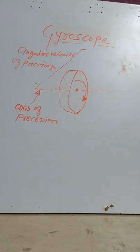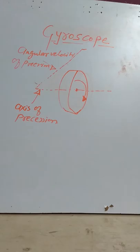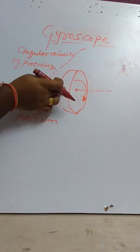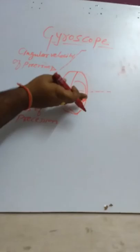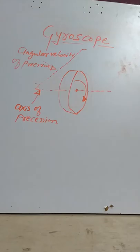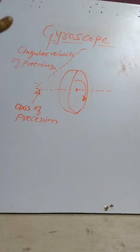Because of the reactive gyroscopic couple, the disc may have its position changed. When we are providing some angular velocity to the disc, the gyroscopic couple is induced. From this figure we understand the actual moment of rotation of the disc.